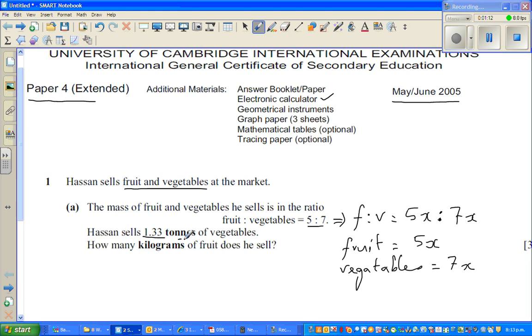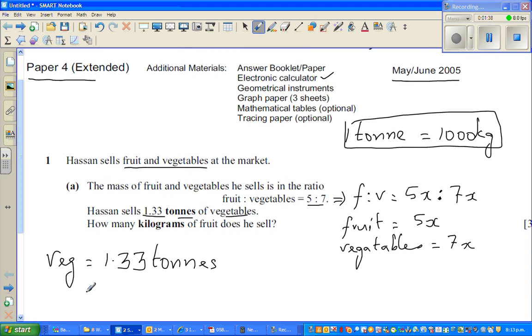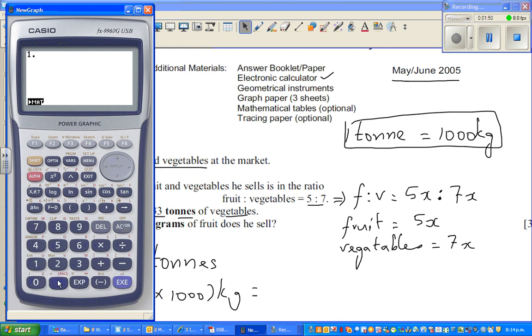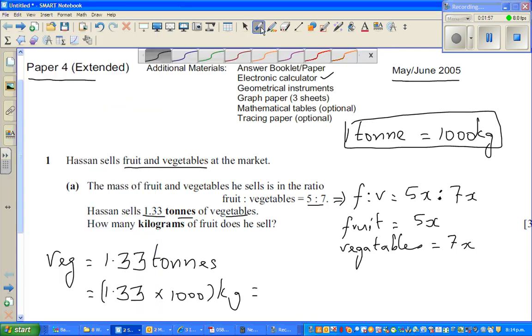He sells 1.33 tons of vegetables. So vegetables, write vegetables in short, it's 1.33 tons. Now you should know one ton is 1000 kgs. So let's use that information. So this is 1.33 times 1000 kgs. Let us put this in bracket. And this is my calculator. So it's 1.33 times 1000, which is 1330. So that's the total vegetables.